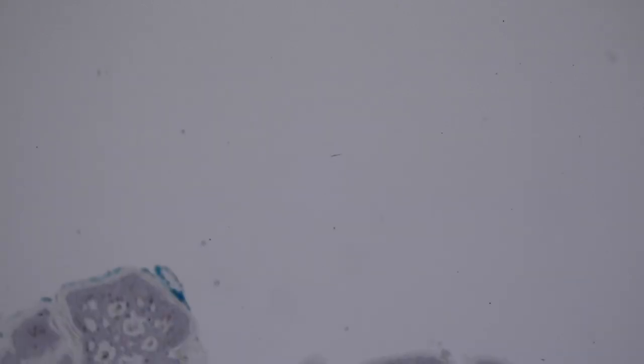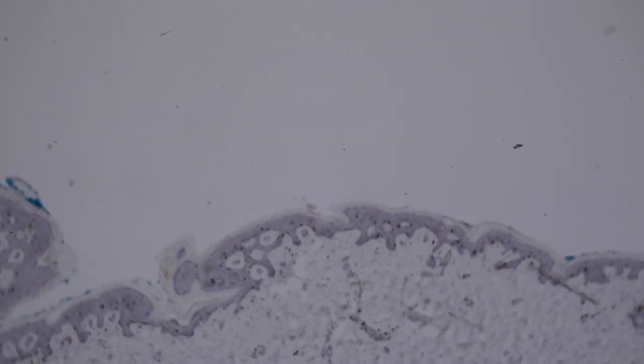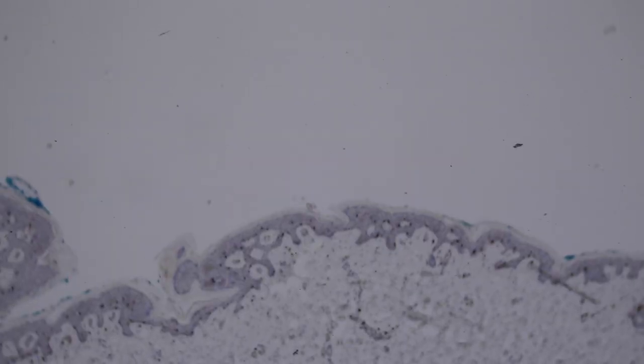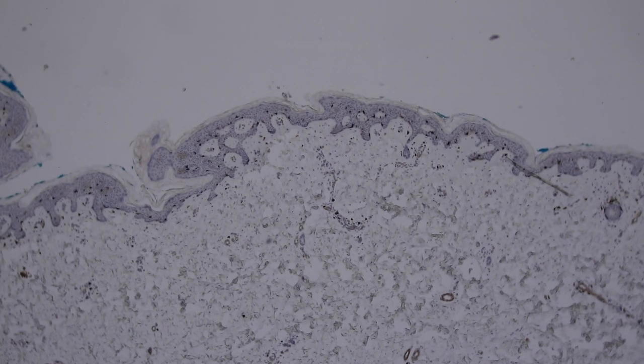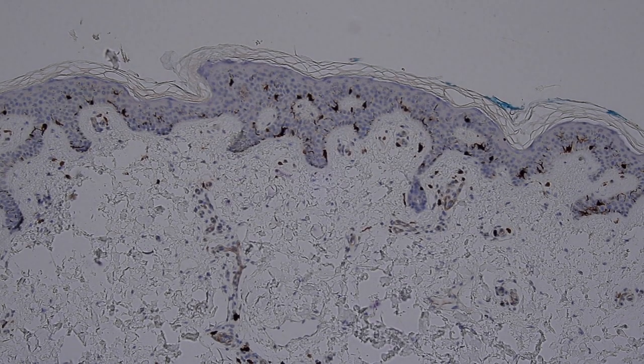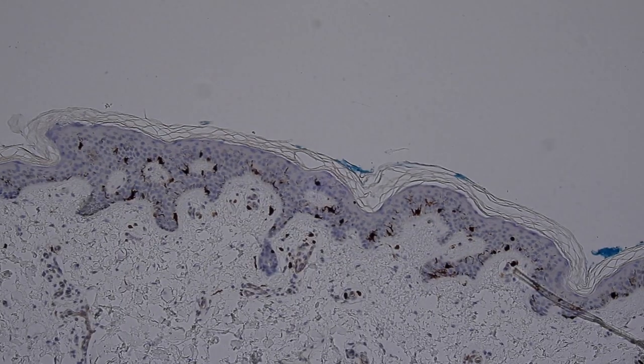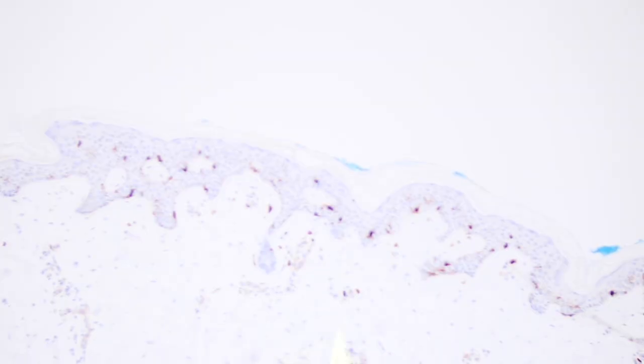So the next thing we're going to look at is S100 protein. The reason I'm showing you S100 protein is that it stains nerve and some other things, and it stains melanocytes in the epidermis, so it will stain melanocytes along the basal layer, these little guys down at the bottom here.